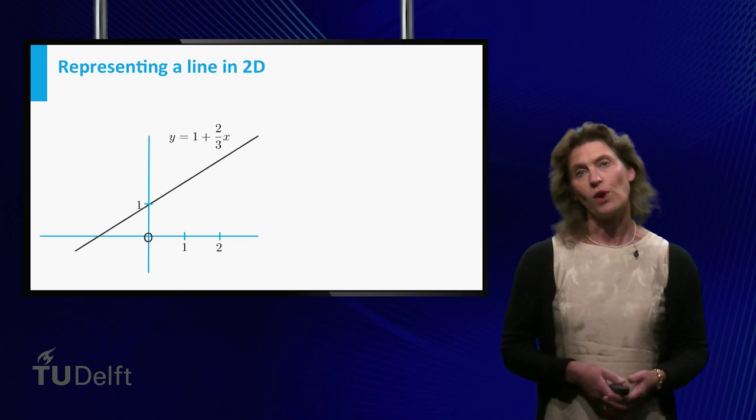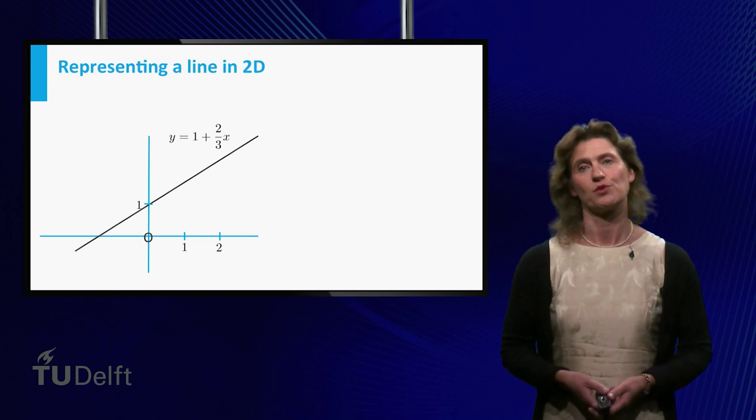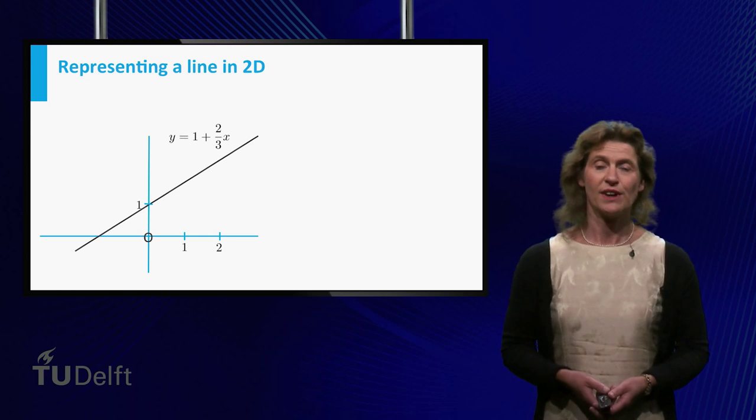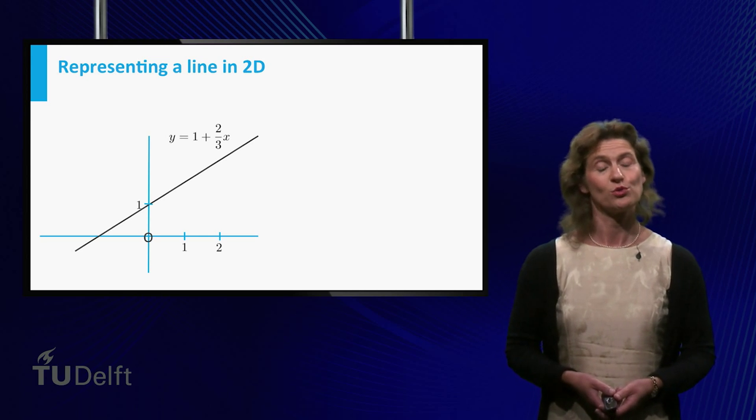Namely, if you go one step to the right starting from a point on the line, you find the new point on the line by going 2/3 up.